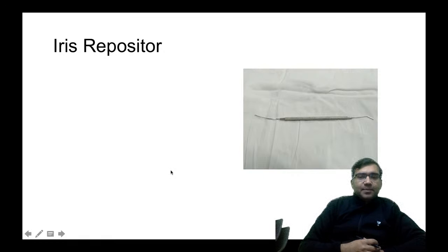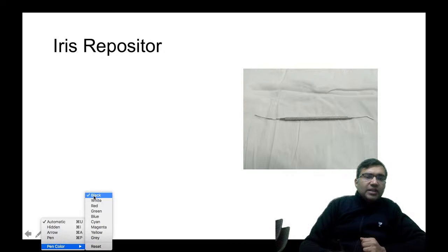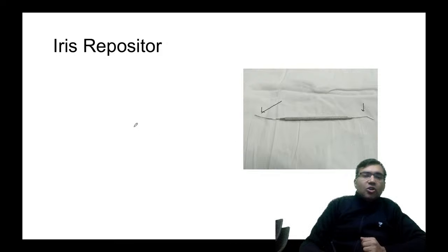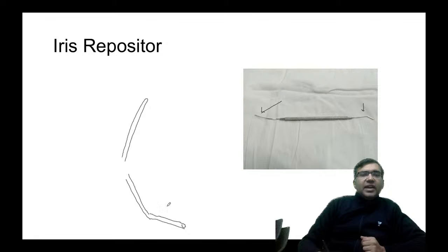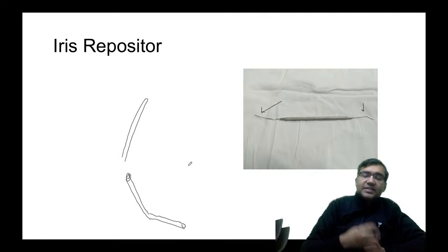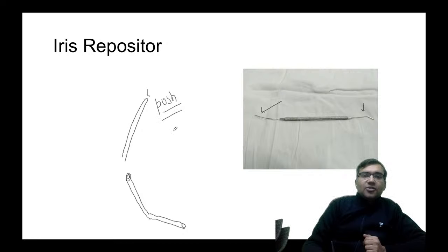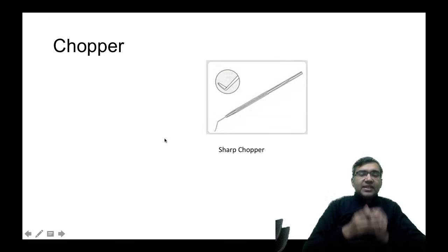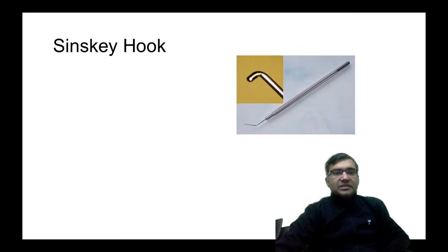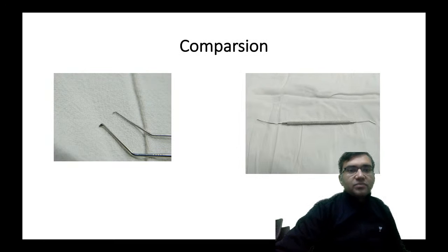The iris repositor is used during cataract surgery when the iris prolapses through the corneal incision. With its blunt edges you can push the iris back inside — this is called iris repositing. To summarize: chopper has sharp edges for cutting nucleus, Sinski hook has blunt edges for holding/dialing IOL, and iris repositor has blunt angled ends for repositing prolapsed iris.